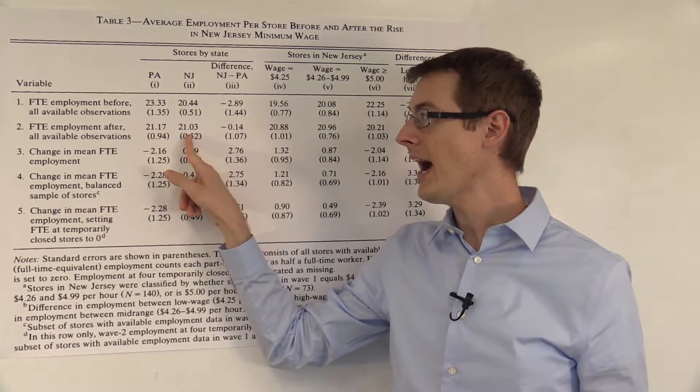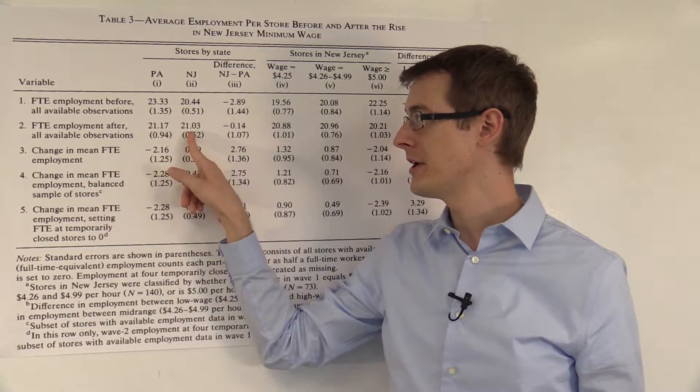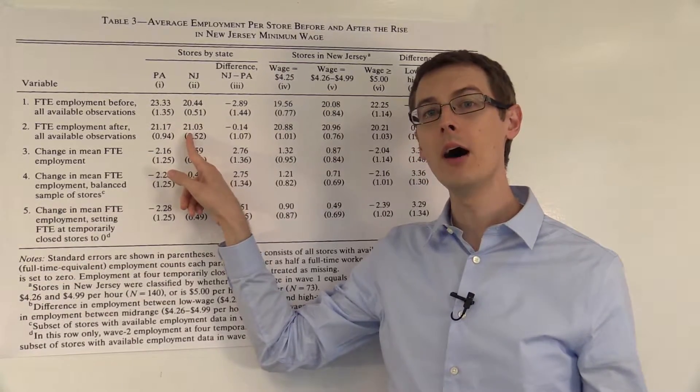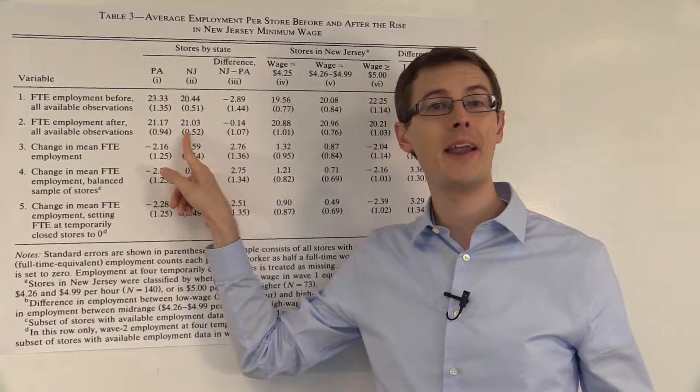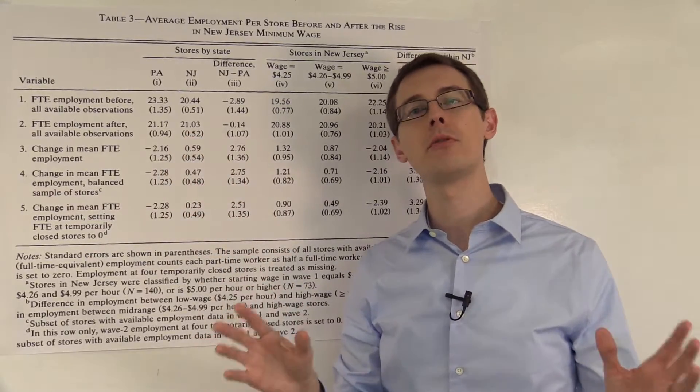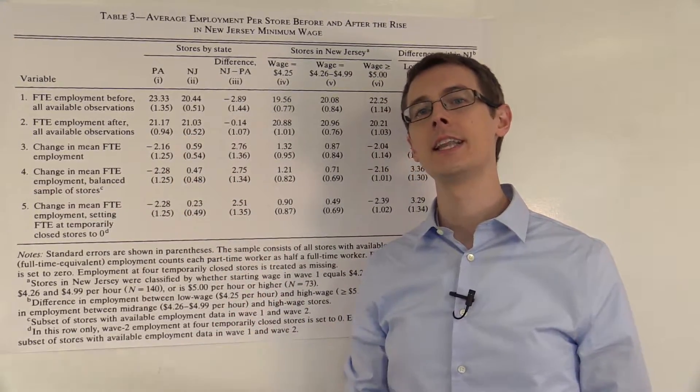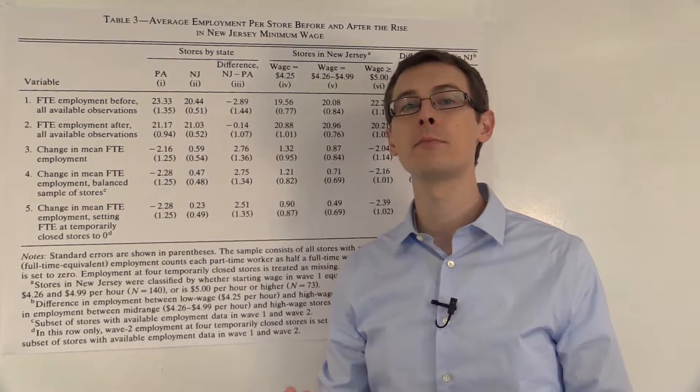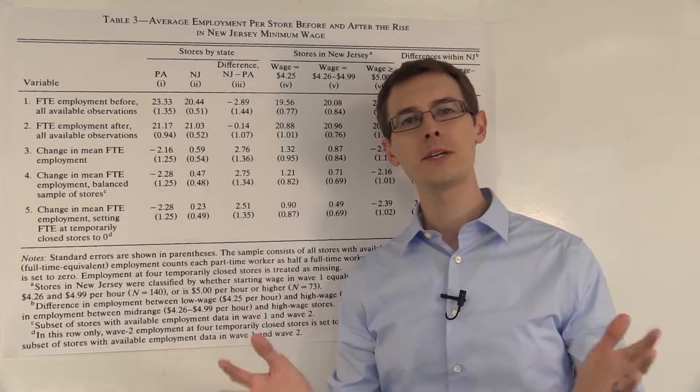Then, after the minimum wage was increased, employment went up to 21 people. So it increased by about half a worker. So that's what the before and after comparison suggests, that the minimum wage law increased employment by half a worker.